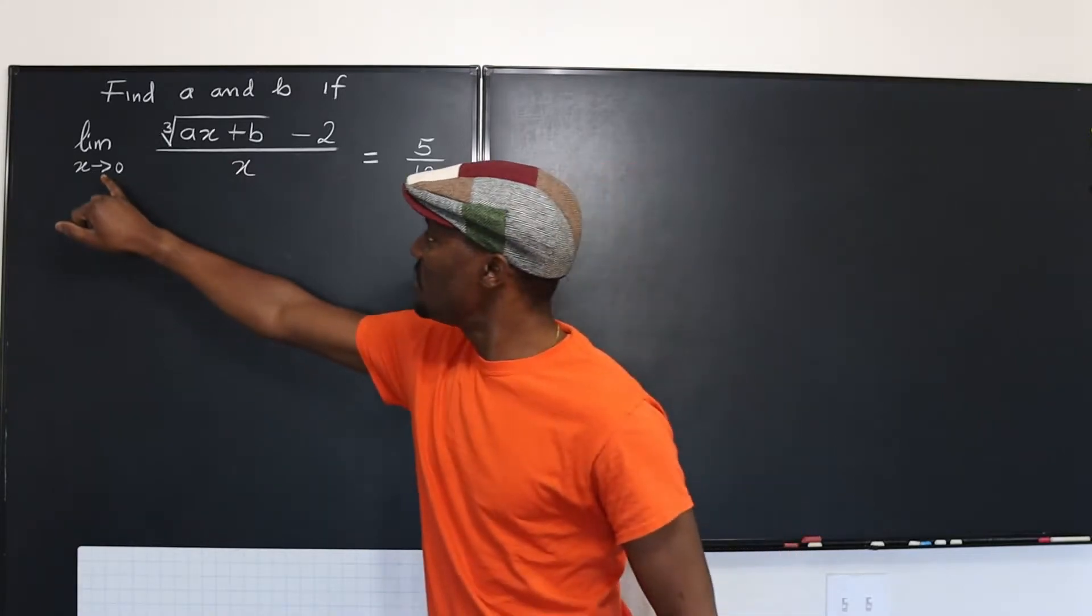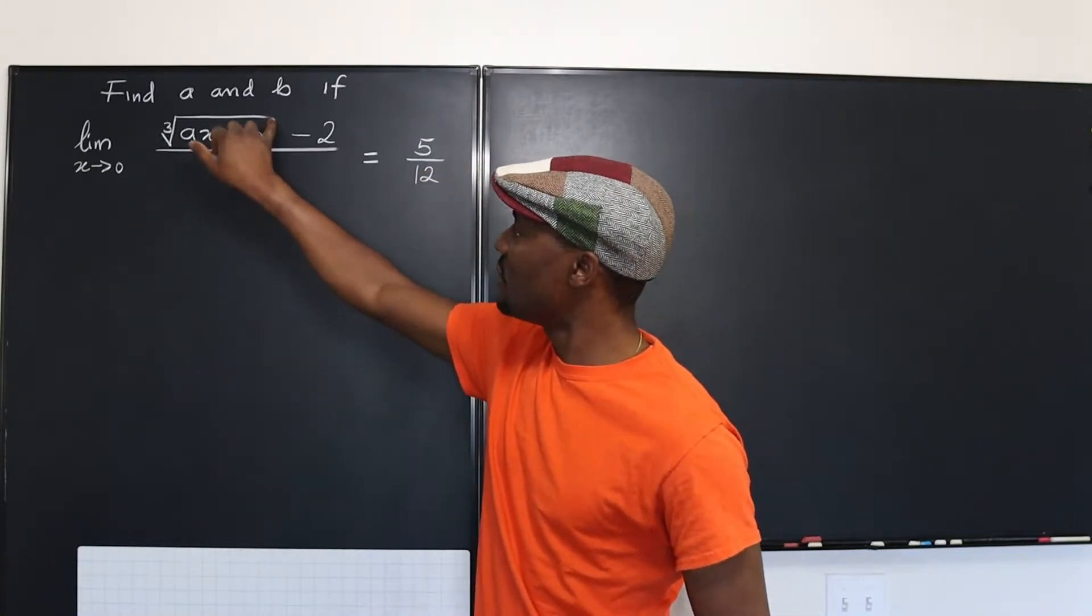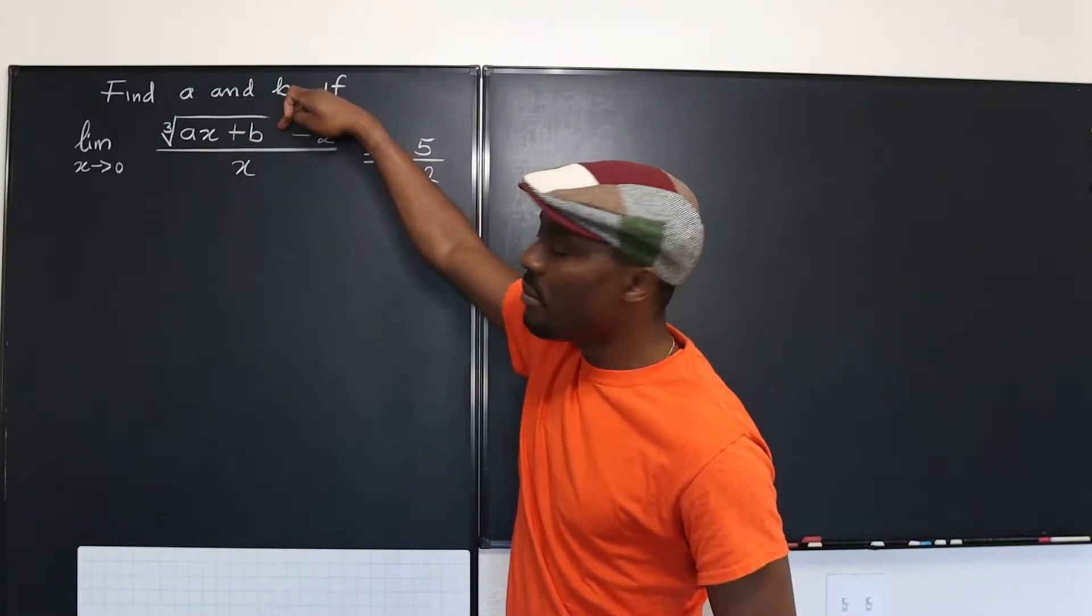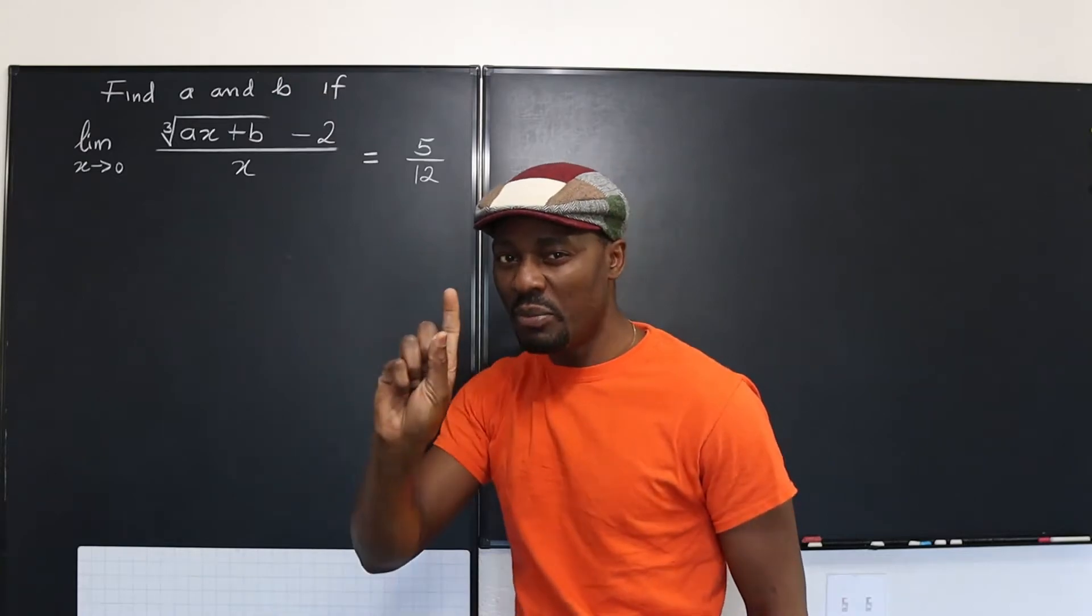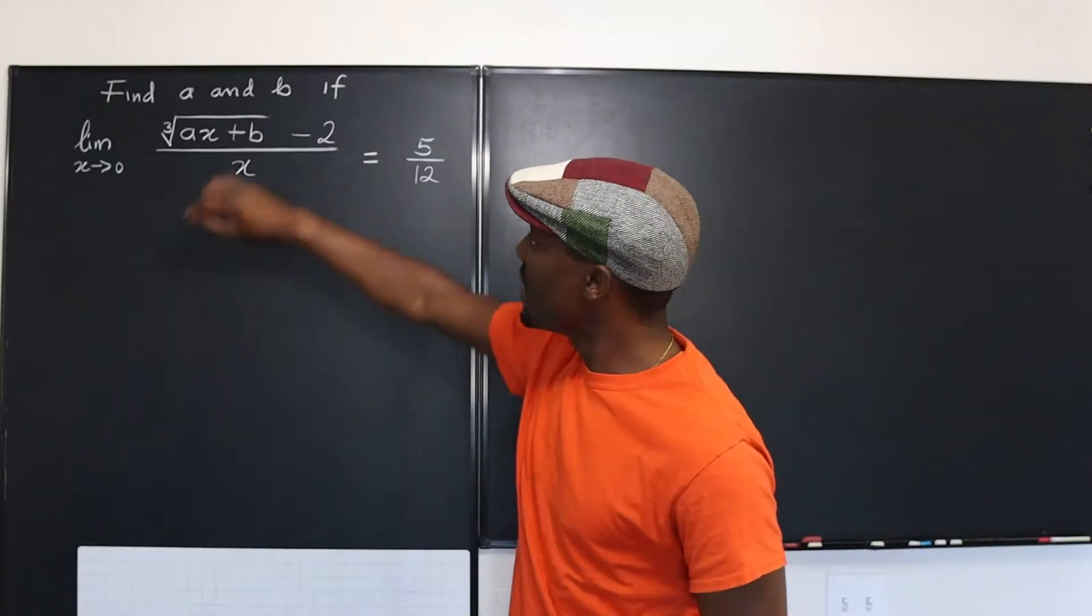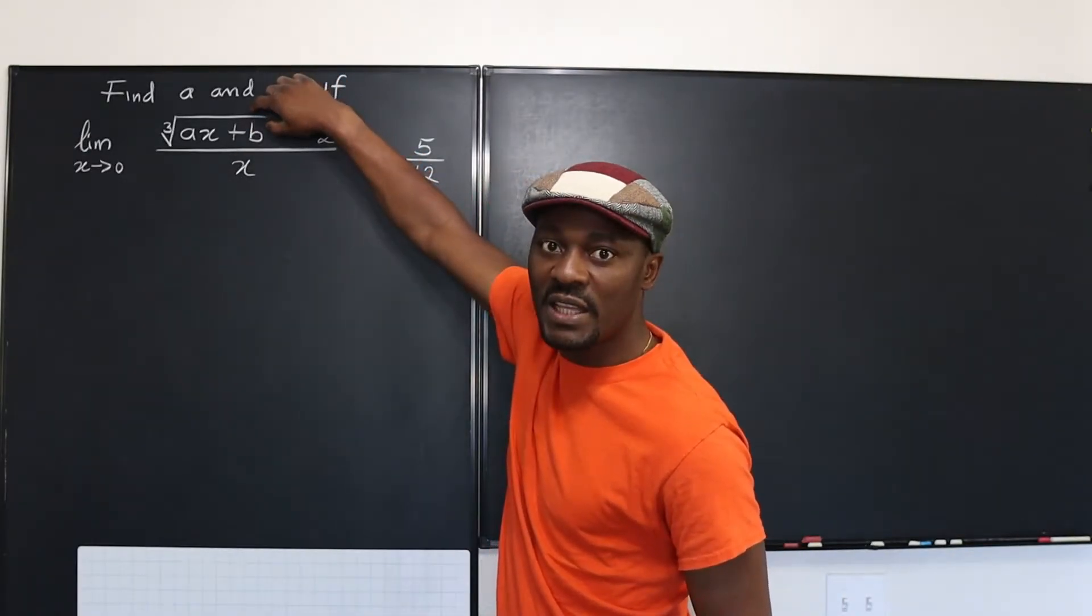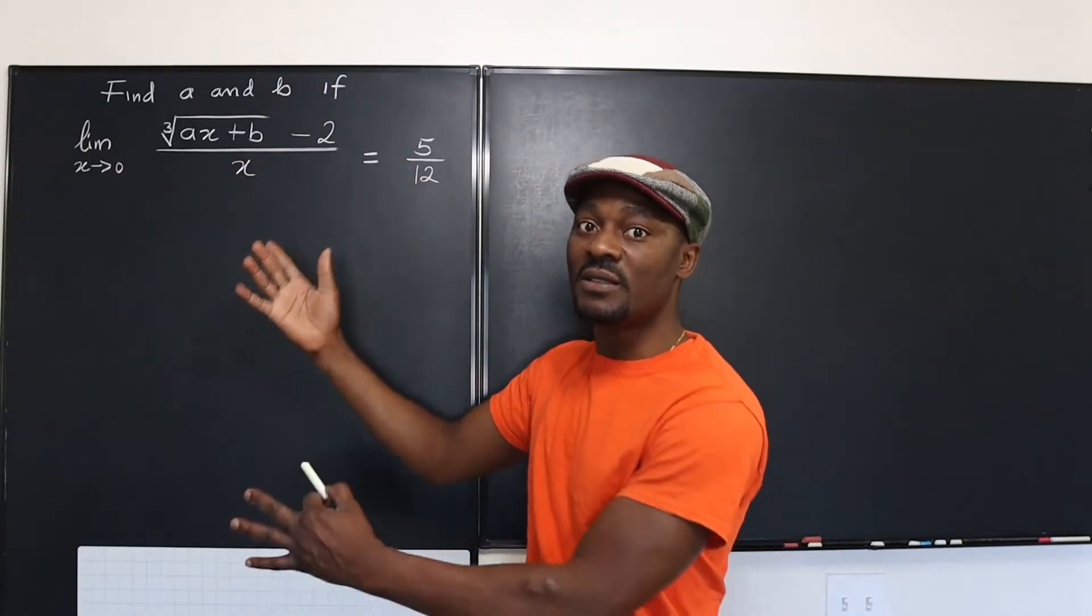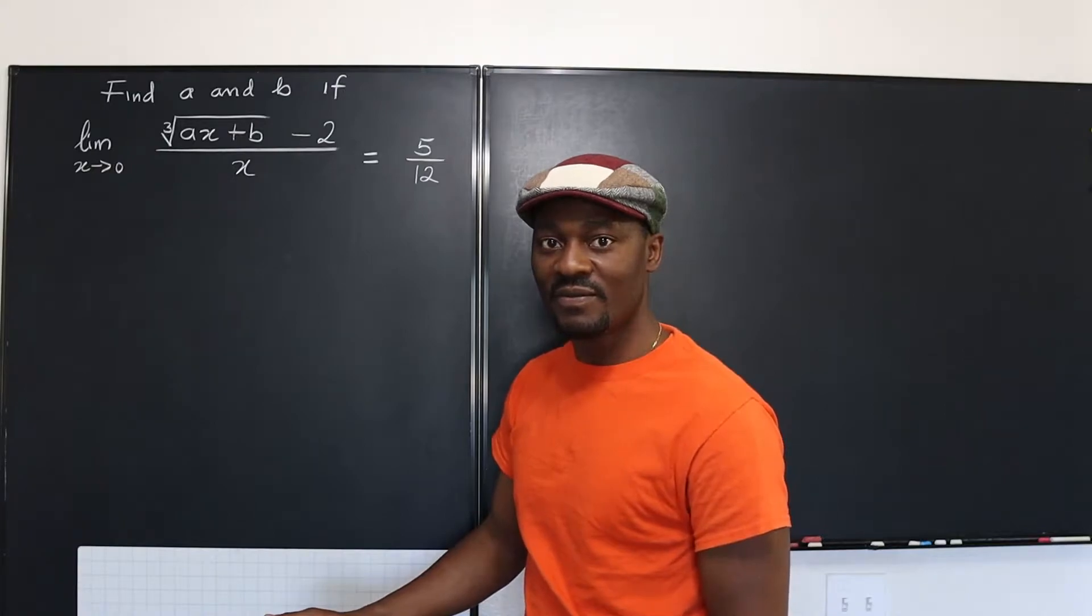And if you substitute X equals zero here and X equals zero here, well, obviously you'll get zero on top. Also, you should get zero. So let's play with that and say that substituting X equals zero in the top here will give us zero. So we can have zero over zero and then we can think of applying L'Hopital's rule.